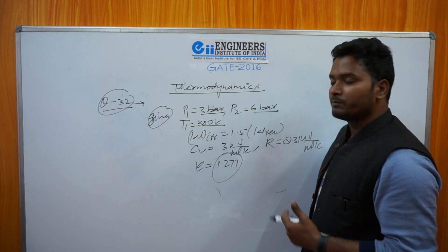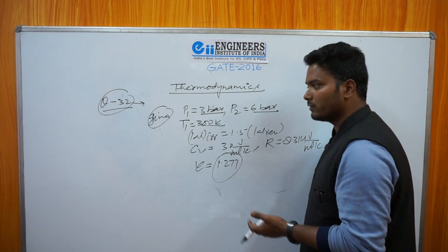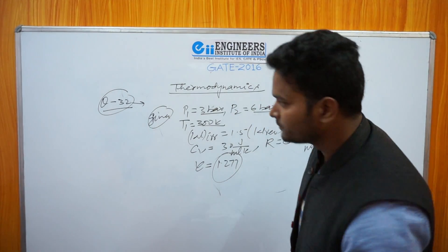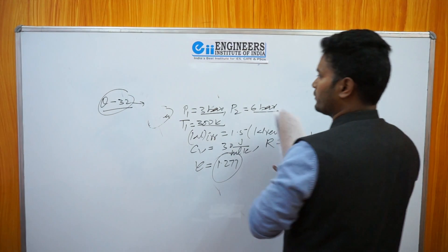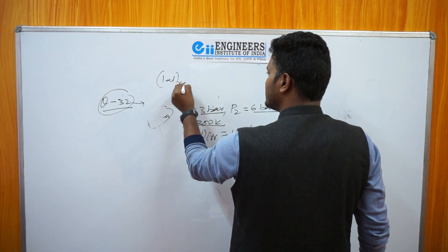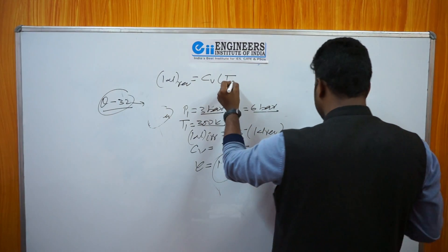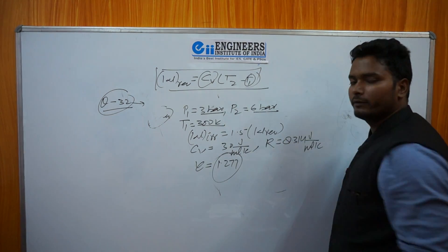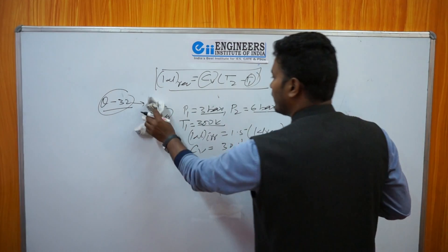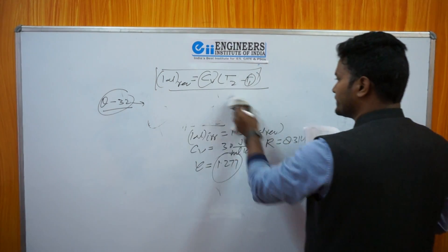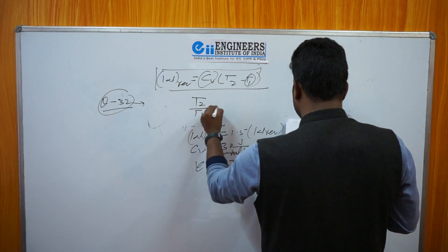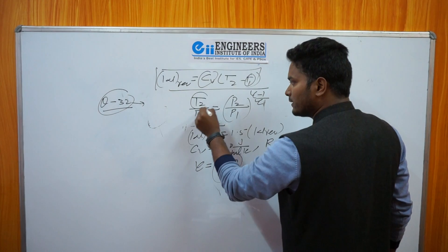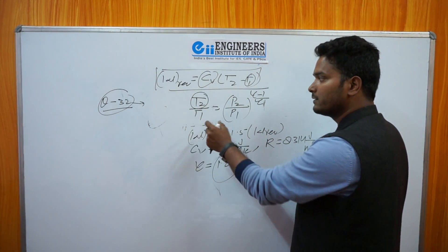They have asked what is the output temperature T2 when the process follows the irreversible path. First we find the work done in the reversible adiabatic process. Work done in the reversible adiabatic process equals Cv × (T2 − T1). Since the process is adiabatic, T2/T1 = (P2/P1)^((γ−1)/γ). T1 is given as 300 Kelvin, and we need to find the output temperature T2 for the reversible adiabatic process.